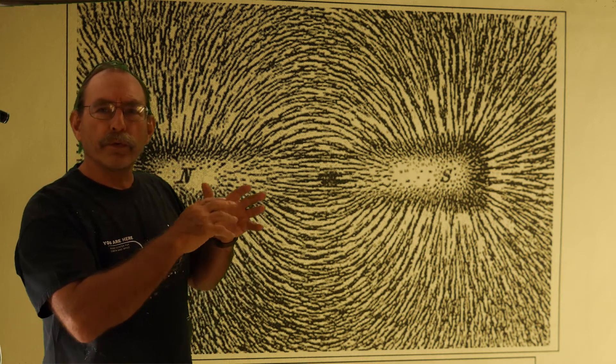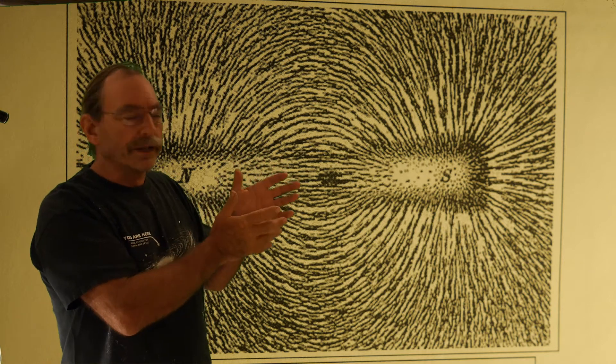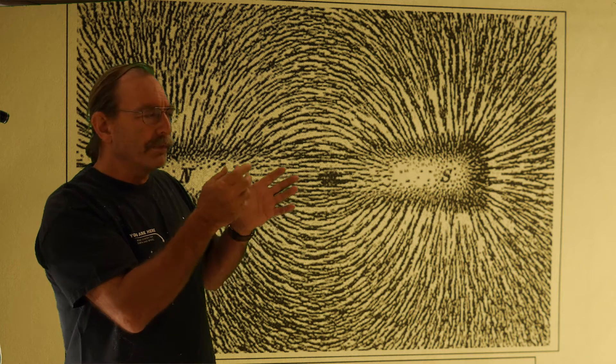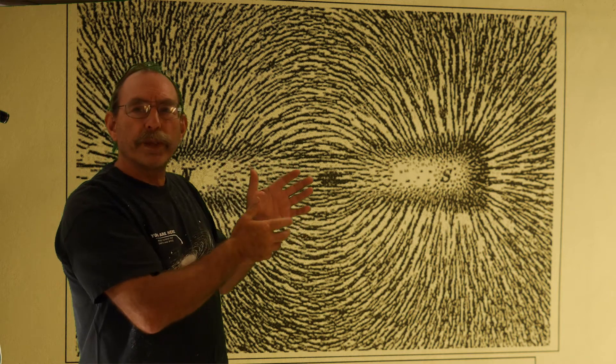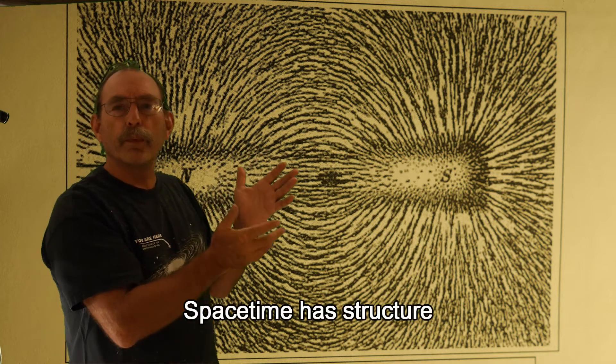Here we can see that matter is conforming to fields, to a field effect that's imposed in space. Between the field structure of space and the field structure of the matter itself, there's an interaction, and they conform one to another.